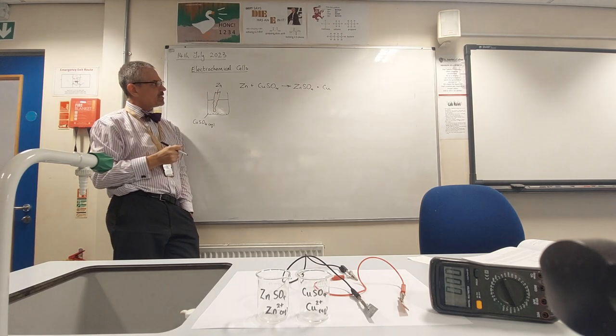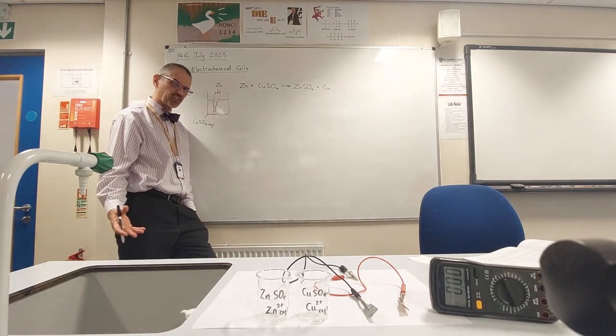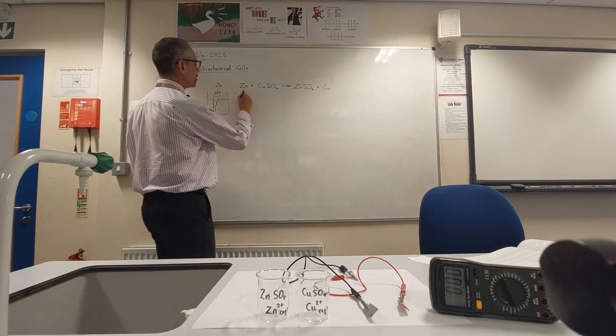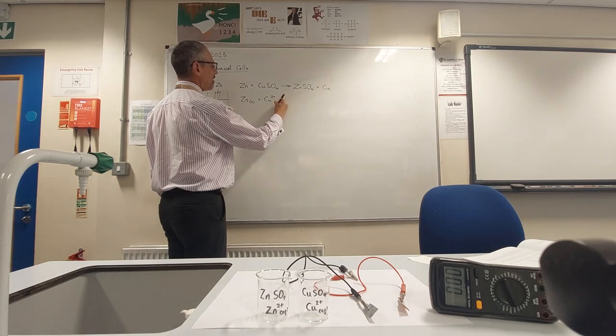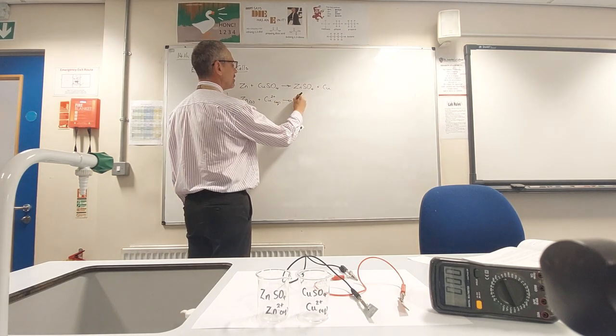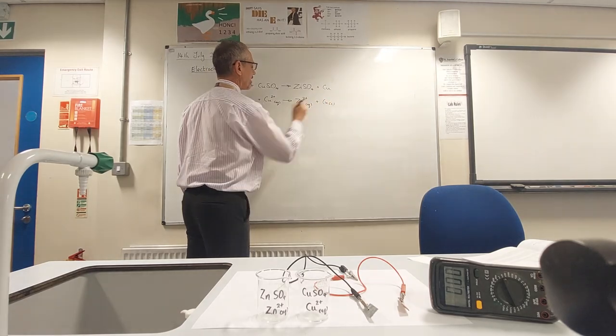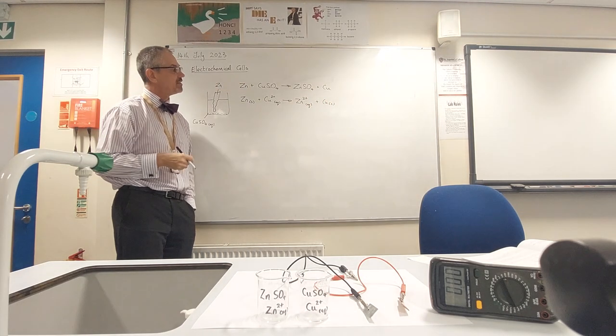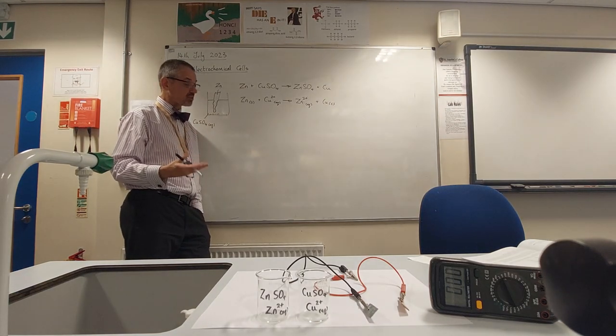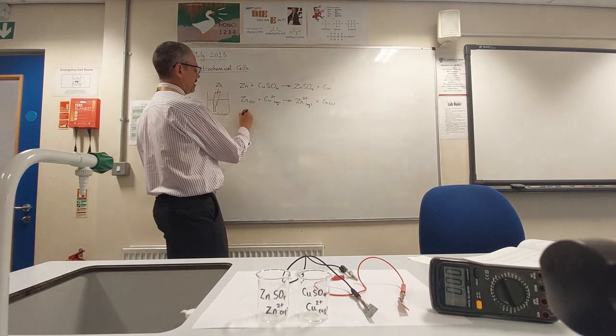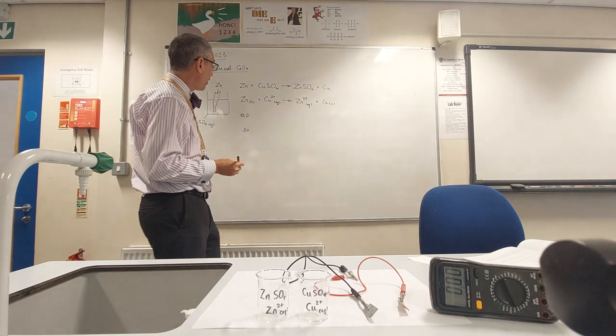That would be a GCSE reaction. A better reaction equation would be an ionic equation. Let's throw in some state symbols as well. So the copper 2+ ions in solution are becoming copper solid, and the zinc solid is becoming zinc 2+ ions. Even better than that would be a redox approach, so we could break that down into reduction and oxidation half equations.